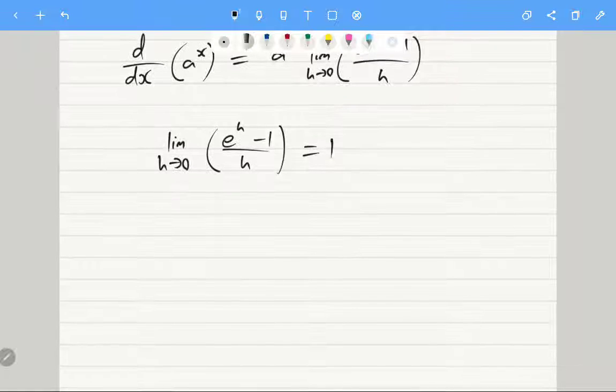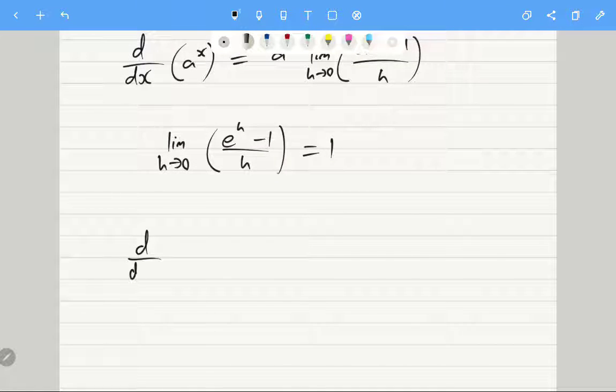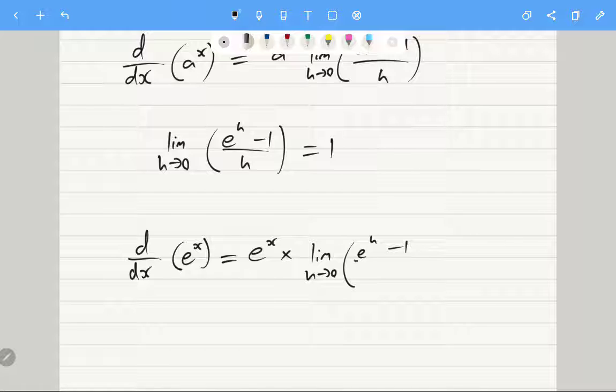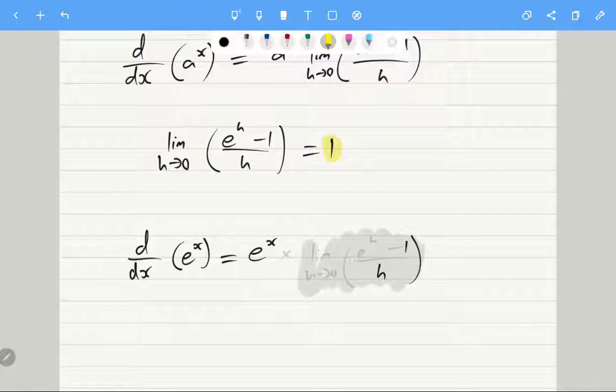Why is that useful? Well that means the derivative d dx of e to the x is equal to e to the x times the limit as h goes to 0 of e to the h minus 1 over h. But this whole thing is equal to 1 based on what I just said above. Therefore the derivative of e to the x is just e to the x.